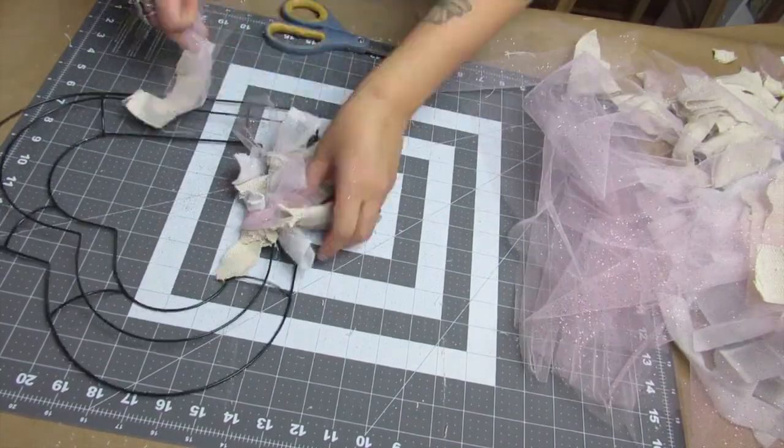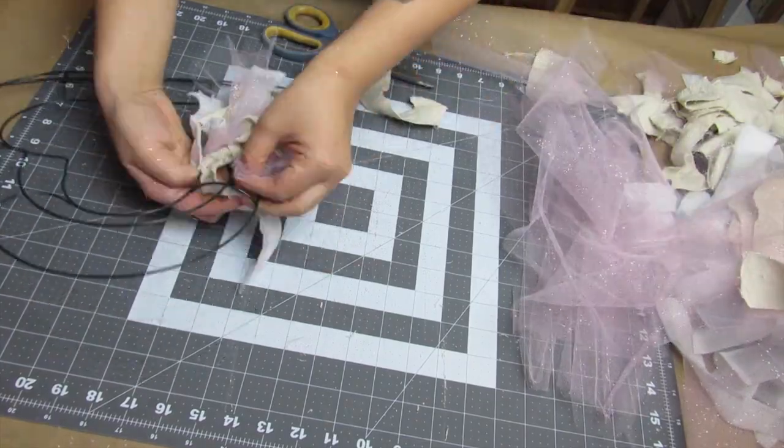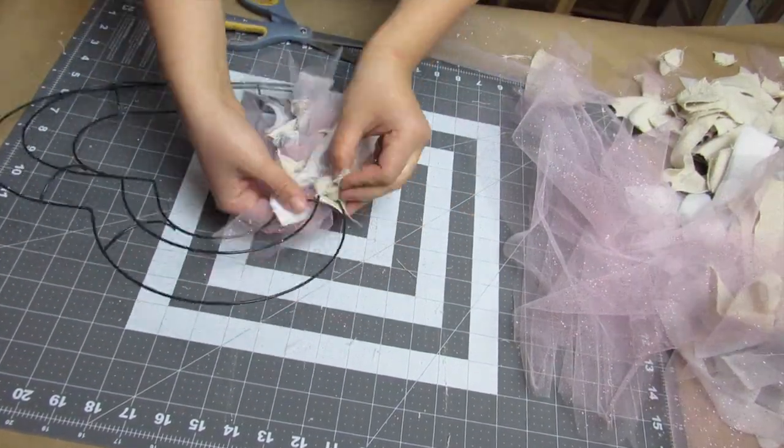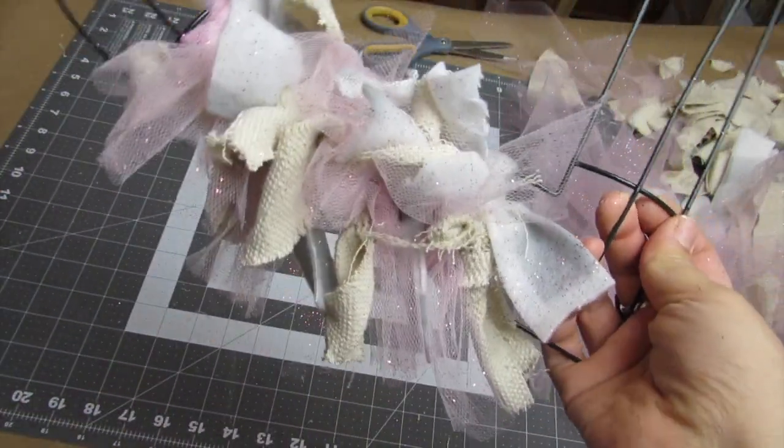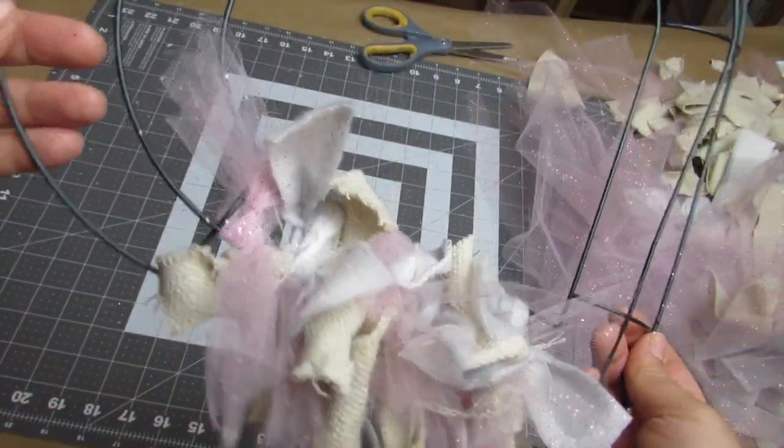Then you just do that for the rest of the wreath. Since I had more of the buffalo check, you'll see I kind of double that up or do that in a few rows, then add some tulle and drop cloth.